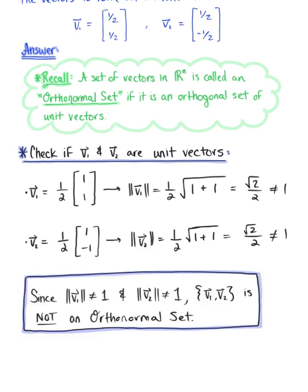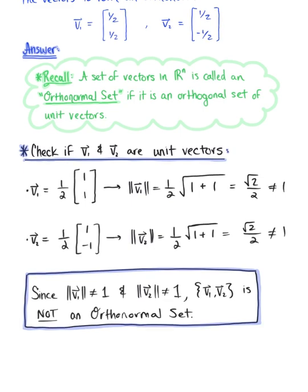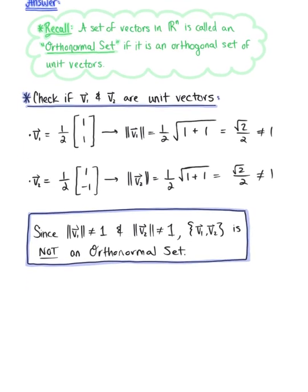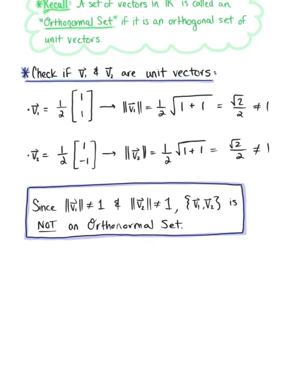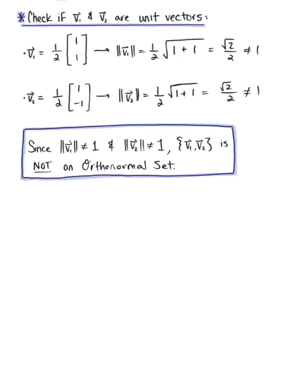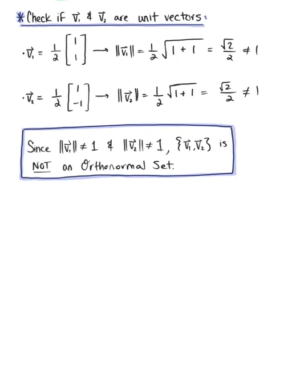Since the length of v₁ and the length of v₂ do not equal 1, we know that the set of vectors {v₁, v₂} is not an orthonormal set. But that's OK — let's go ahead and normalize these vectors to attain an orthonormal set.